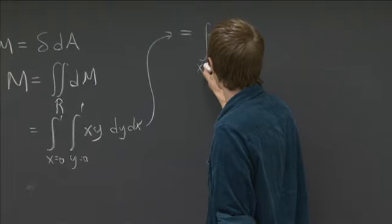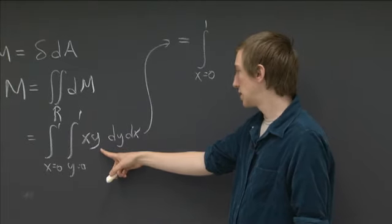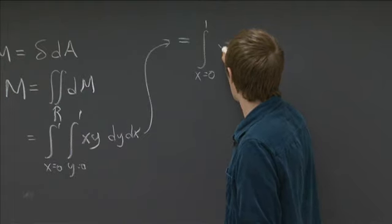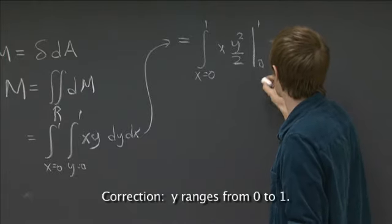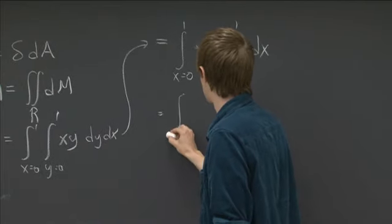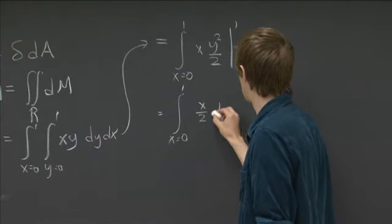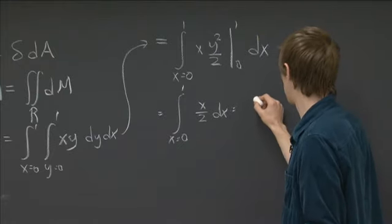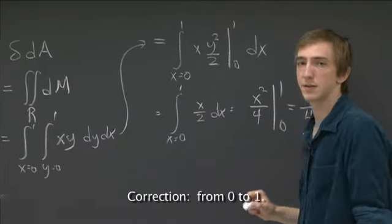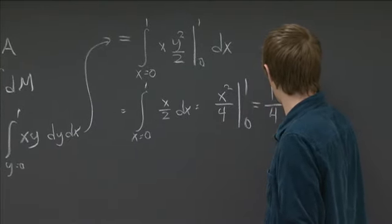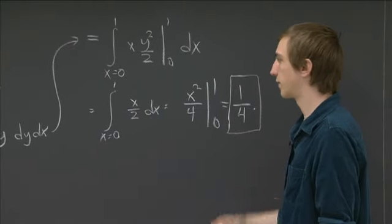So we have integral x equals 0 to 1. We have x, y and we need to integrate that in y. So we have x, y squared over 2, and then y ranges from 1 to 0, dx. So this is the integral from x equals 0 to 1 of x over 2, dx. And this is just x squared over 4 from 1 to 0. So this is just 1 fourth. So that tells us that the total mass of this unit square is 1 fourth.